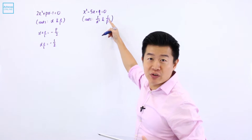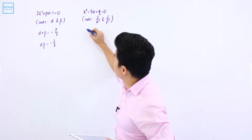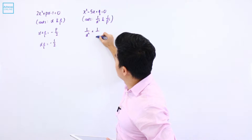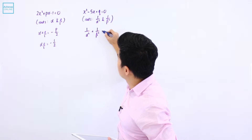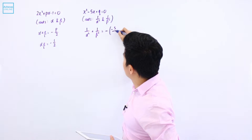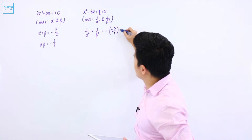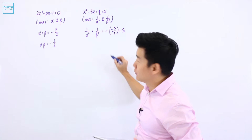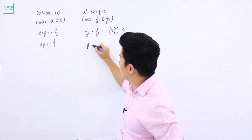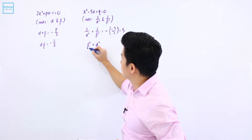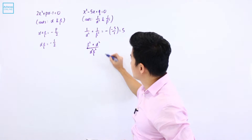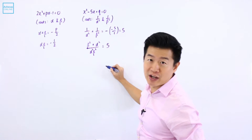And 1 over alpha squared and 1 over beta squared are the roots of this equation. That means 1 over alpha squared plus 1 over beta squared is going to be minus of minus 5 over 1, which is going to be equal to 5. If I were to group this into one single fraction, it is going to be beta squared plus alpha squared divided by alpha squared beta squared, and this is equal to 5.